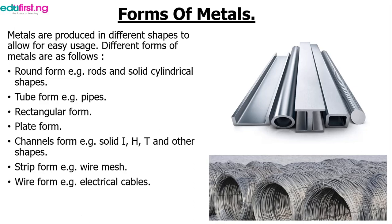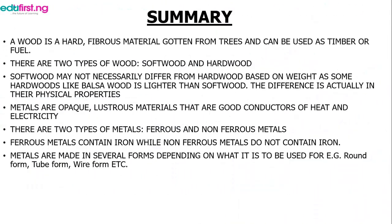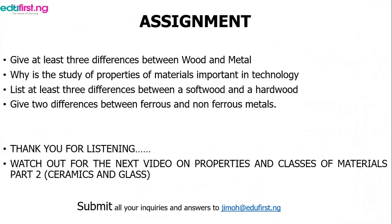In this video, we've been able to talk about wood, the classes of wood, and the differences between the two classes. We've talked about metals, the two types of metals, the differences between them, and the forms of metal. The assignment is: give at least three differences between wood and metal; explain why the study of material properties is important in technology; list at least three differences between softwood and hardwood; and give two differences between ferrous and non-ferrous metals. Watch out for the next video on ceramics and glass.